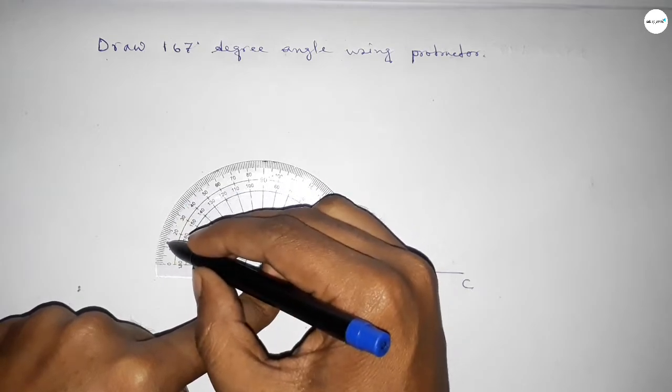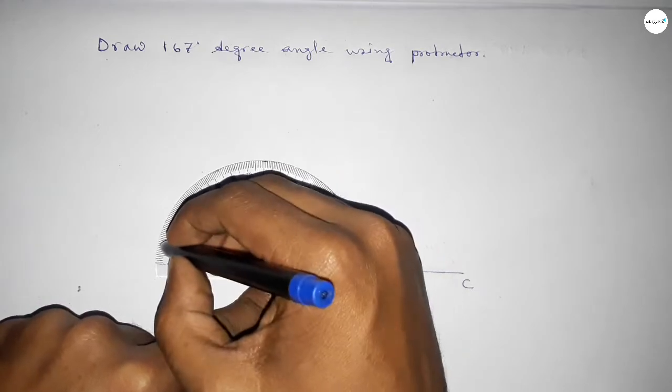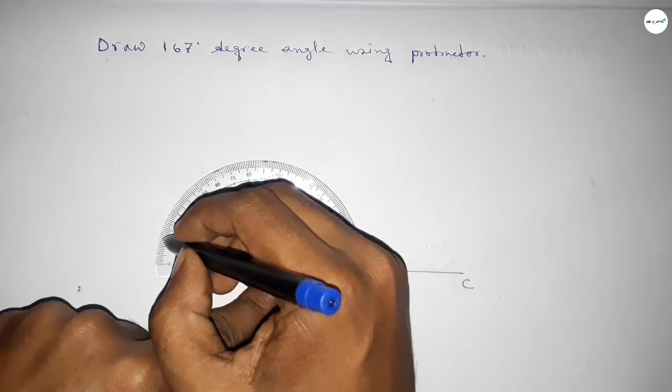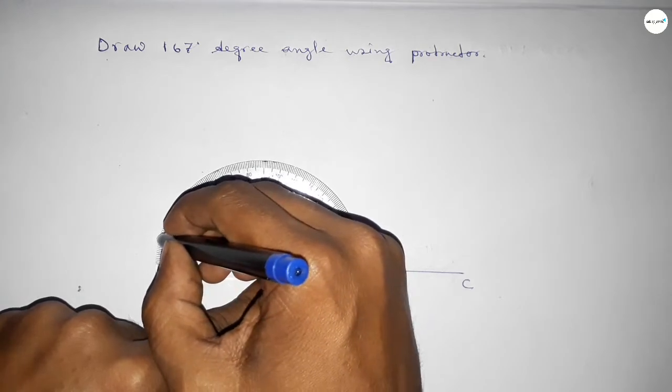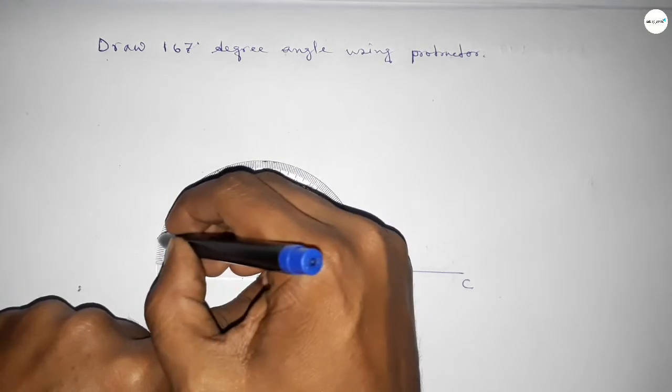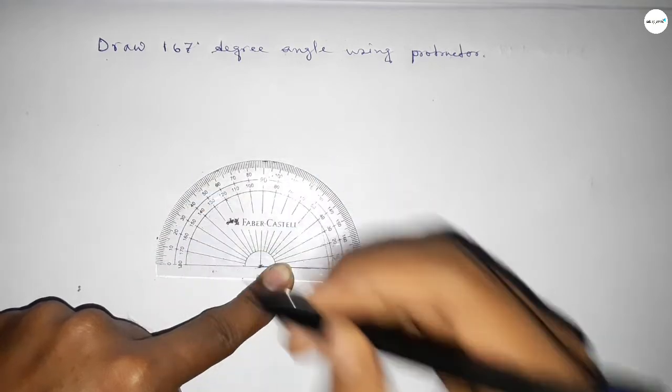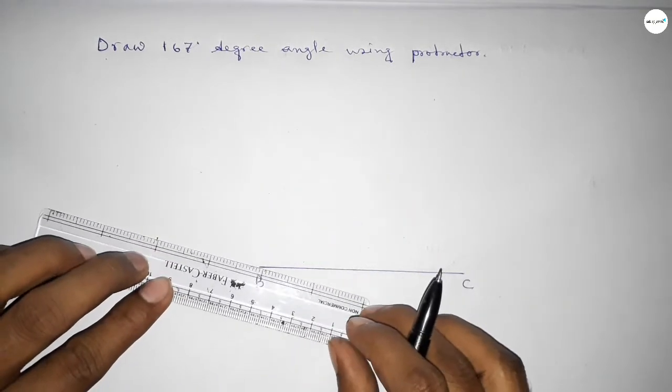160, 165, 166, 167. So this is 167 degree angle. Now we have to join this to get 167 degree angle.